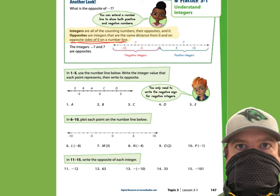In problems 1 through 5, use the number line to write the integer value each point represents, then write its opposite. For point A: I find zero, A is to the left so it's negative, and it's two spots away — so negative 2, and its opposite is 2. For point B: it's on the left side again, one two three four spots away — so negative 4, and negative 4's opposite is 4. Please hit pause and do three, four, and five.